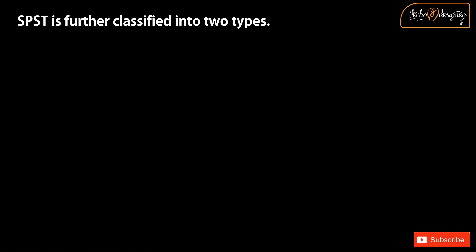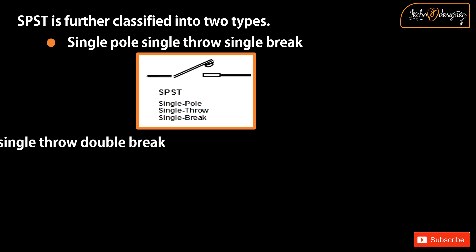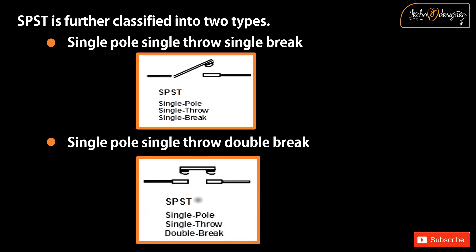SPST is further classified into two types: Single pole single throw single break, and Single pole single throw double break.